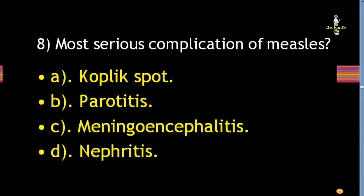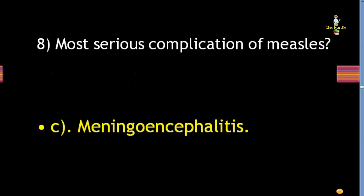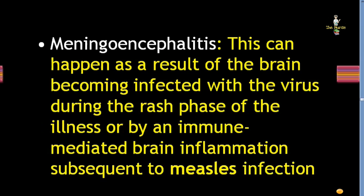Next question: most serious complication of measles. Correct answer is meningoencephalitis. This can happen as a result of the brain becoming infected with the virus during the rash phase of the illness, or by an immune-mediated brain inflammation subsequent to measles infection.